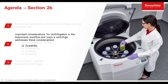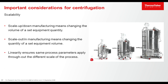Here is section 2B: scalability, an important consideration. Scalability can either be scale-up or scale-down, meaning changing the volume of a set equipment quantity — the equipment goes bigger or smaller to process more or less volume. Or scale-out or scale-in, meaning changing the quantity of a set equipment volume — the number of equipment units goes up or down to process more or less volume. Linearity is important to ensure the same process parameters apply throughout different scales.